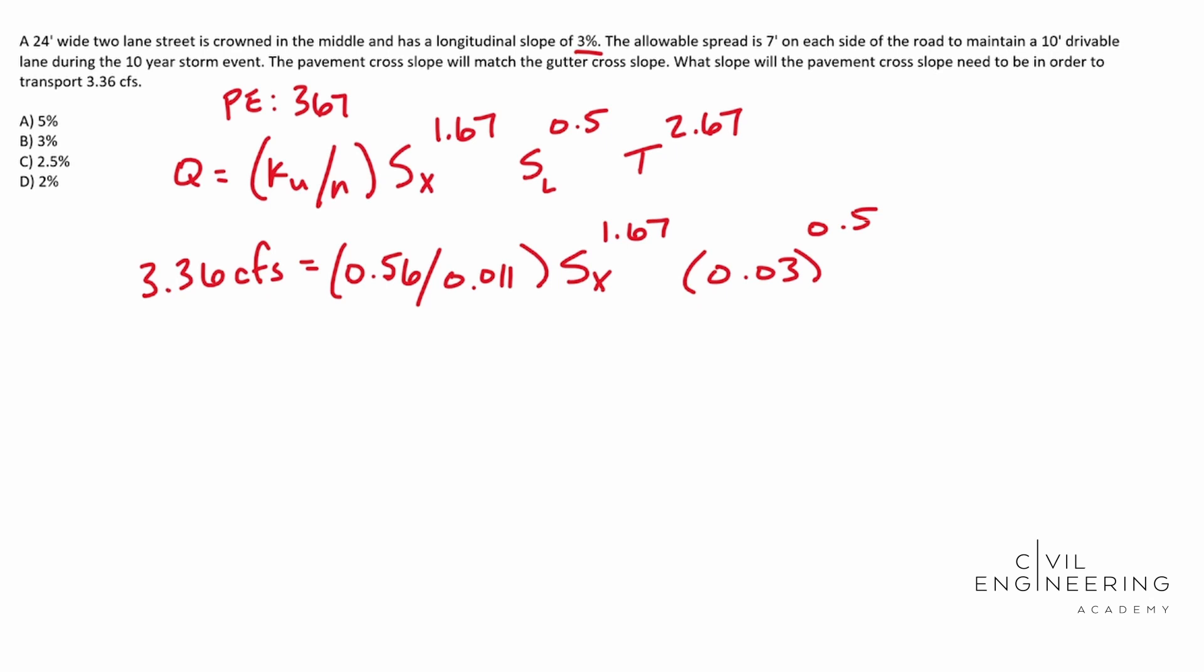Then we have our spread. So this is our allowable spread. What we are calculating is one side of the road. So if you're going to picture a road that's crowned in the middle, it's a two lane. So we know there's one lane on each side that's 12 feet.